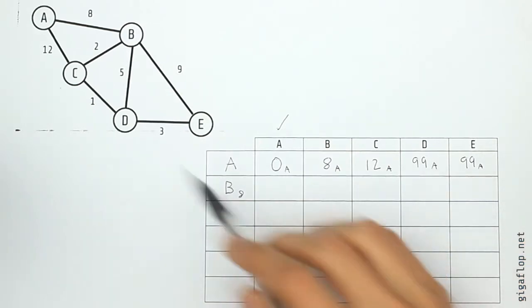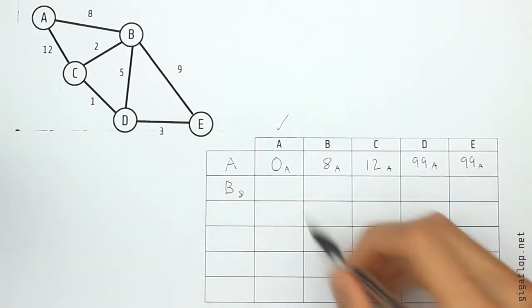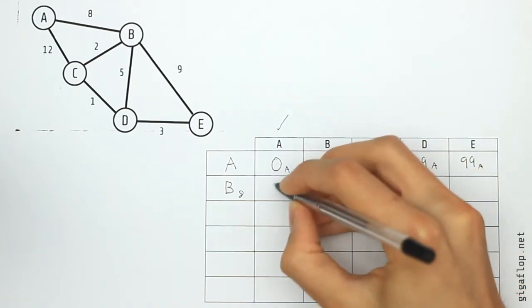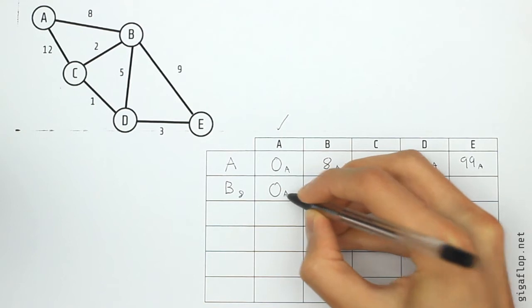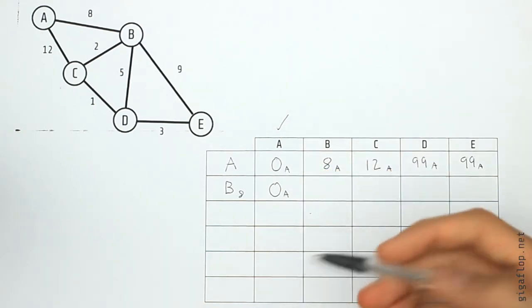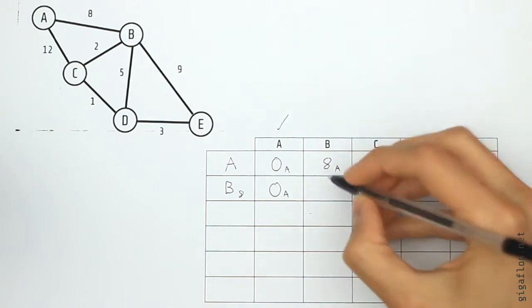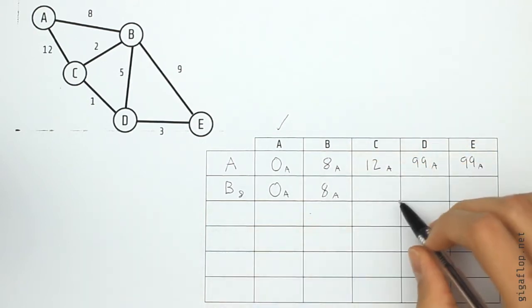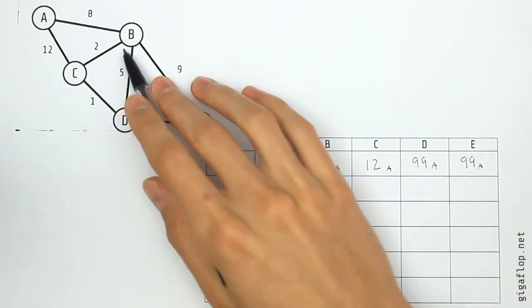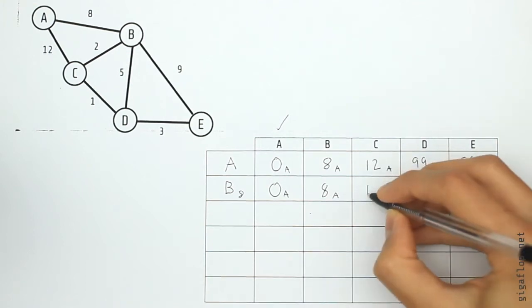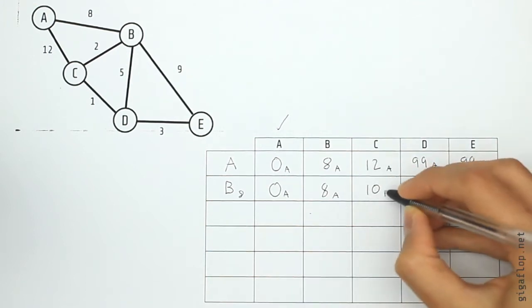So B to A, they are connected with a length of eight, but we've already got zero which is lower than eight, so we're not going to write down eight, we're just going to have zero. And we're going to put that A just to say that's where the zero came from. B to B, now although these are connected with a weight of zero, we leave it at eight, eight from A. B to C are connected with a weight of two, but we've already taken eight to get to B, so we add that to the eight to get ten, and that comes from B.